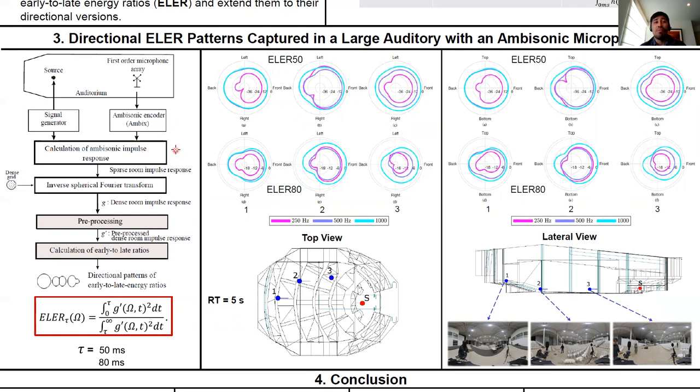Subsequently, the spherical Fourier transform was used to extract room impulse responses for a dense number of directions in the horizontal and median plane of the first-order ambisonic microphone.